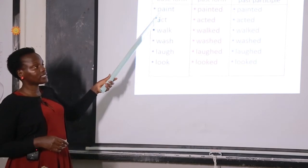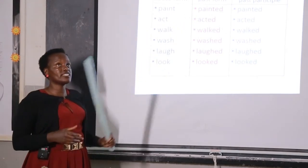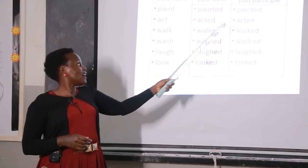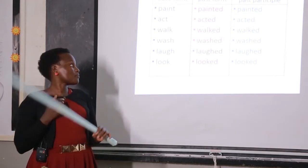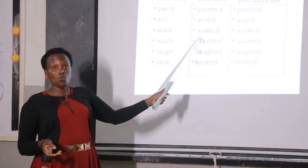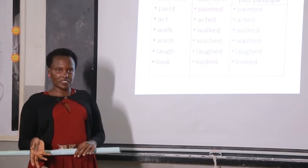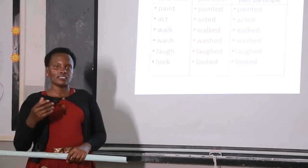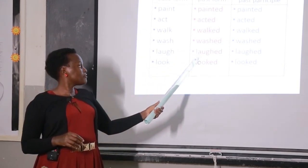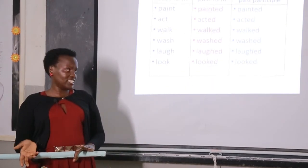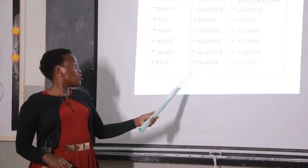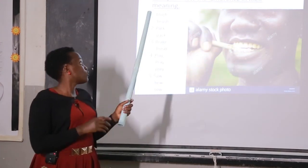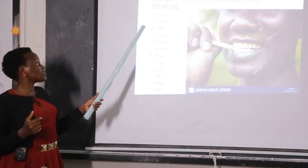We have 'paint' — past form 'painted,' past participle 'painted,' like how our classes are painted. Then 'act' — 'acted,' 'acted': We act in plays. 'Walk' — 'walked,' 'walked': I walked to school every day. 'Wash' — 'washed,' 'washed': I wash my clothes in the morning. 'Laugh' — 'laughed,' 'laughed': Tom likes to laugh loudly. 'Look' — 'looked,' 'looked': we have already used 'looked.' Now let's do this exercise using these verbs to construct sentences.